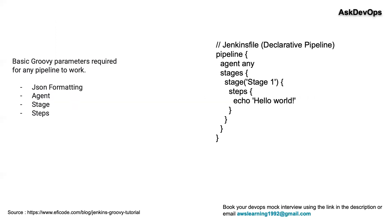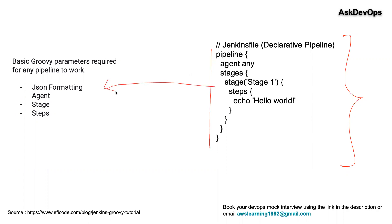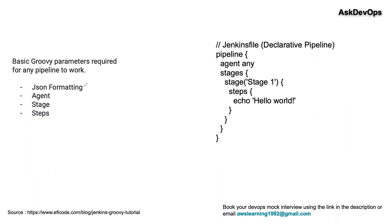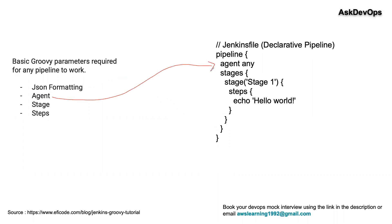It's very easy. There is a small pipeline code written on the right side — it's a Groovy scripting pipeline code with some parameters mentioned. First of all, the JSON formatting has to be proper. Second, you have to mention the agent. If you don't mention the agent, Jenkins will not know where to run it properly.